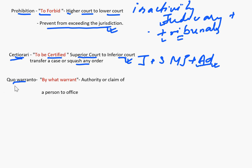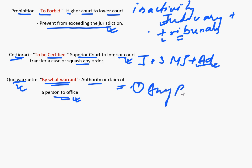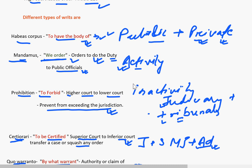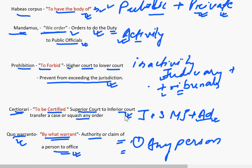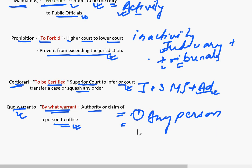Finally, the last writ is Quo Warranto, which means 'by what warrant.' The court examines whether the authority or claim of a person to an office is rightful or not. It is issued against an administrative body, but cannot be issued against any ministerial office or against the President or Governor. One important fact is that this writ can be sought by any person, while other writs can be filed only by the aggrieved person — the person who is actually affected by an act.